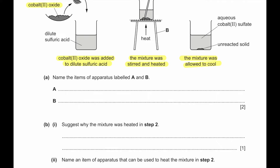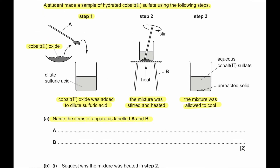Name the items of apparatus labelled A and B. A is a spatula — a spoon-like device used to transfer substances. B is a tripod, which allows a Bunsen burner to sit underneath and heat the reaction mixture.